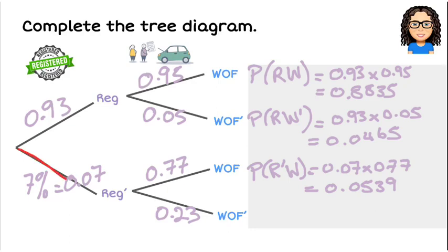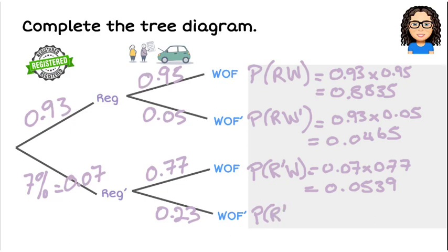Lastly, the chance of a not-registered car with no warrant: we multiply 0.07 times 0.23, which gives a value of 0.0161. So there we have our full tree set up.